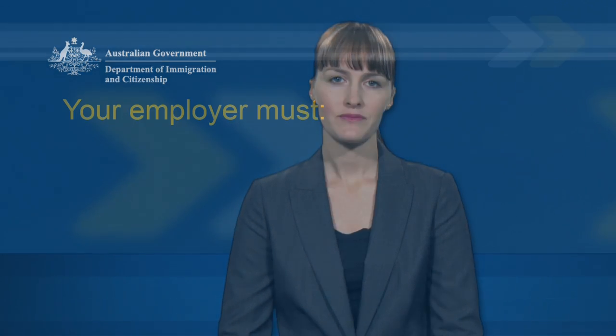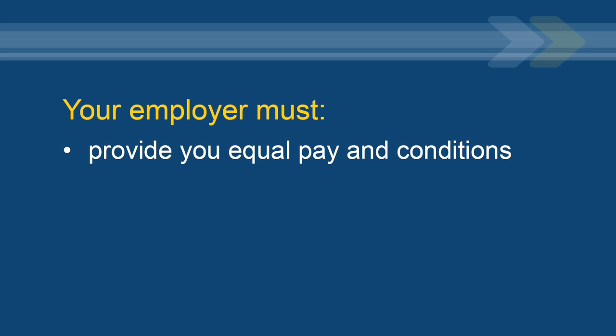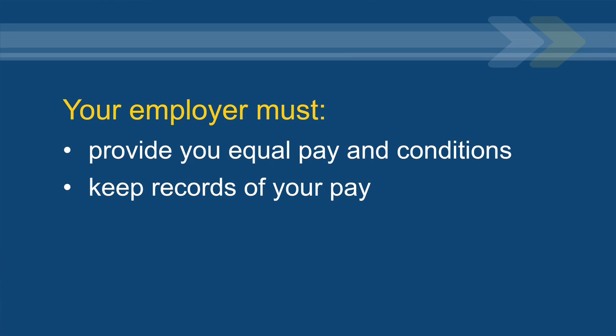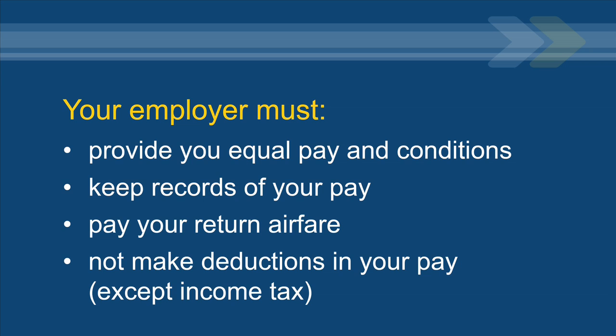As a 457 visa holder, you must work only as a direct employee of your employer, not as an independent contractor. As a direct employee, your employer directs the work you undertake on an ongoing basis, provides the tools and equipment necessary for the work, or provides you with a tool allowance and deducts income tax. Your employer must pay you the same amount as Australian workers doing the same work. Your employer is strongly recommended by the Department to pay you electronically into your nominated bank or credit union account. Your employer must pay your return airfare if you, or the Department, request this in writing. Your employer must not make deductions from your pay without your permission, other than tax, which they must deduct by law.